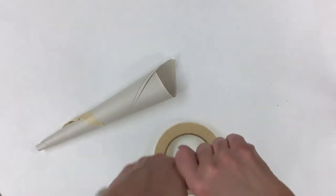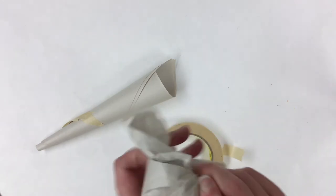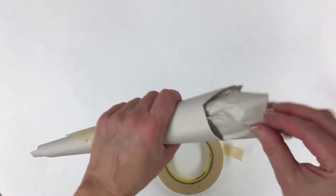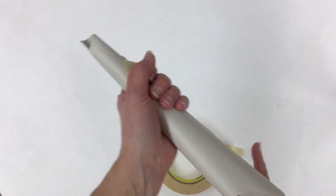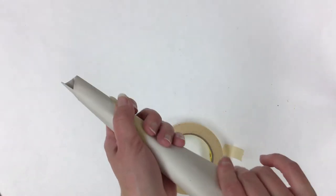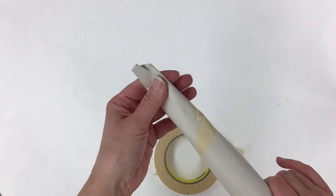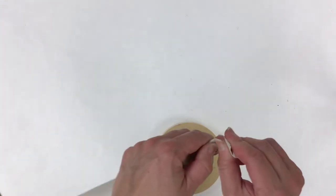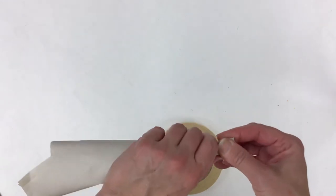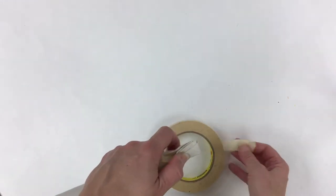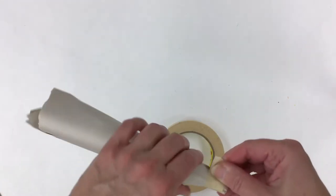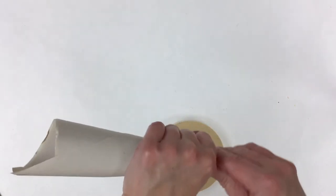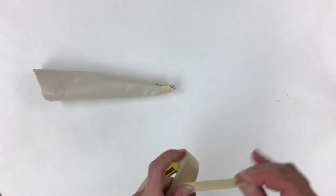There we go. Shove that in there. There's nothing really delicate about this, so let me just shove that in there. I did not get all the way down to the point, but that's okay. I can also look at that, adjust it, tape around that, and keep molding and forming with my hands and my tape.